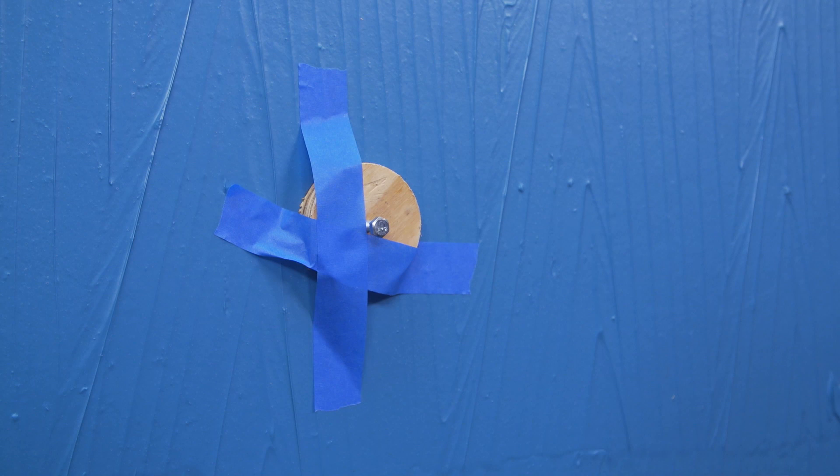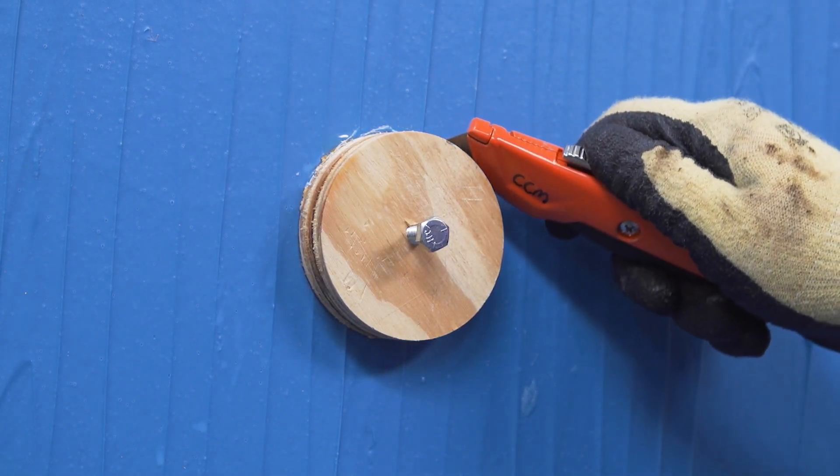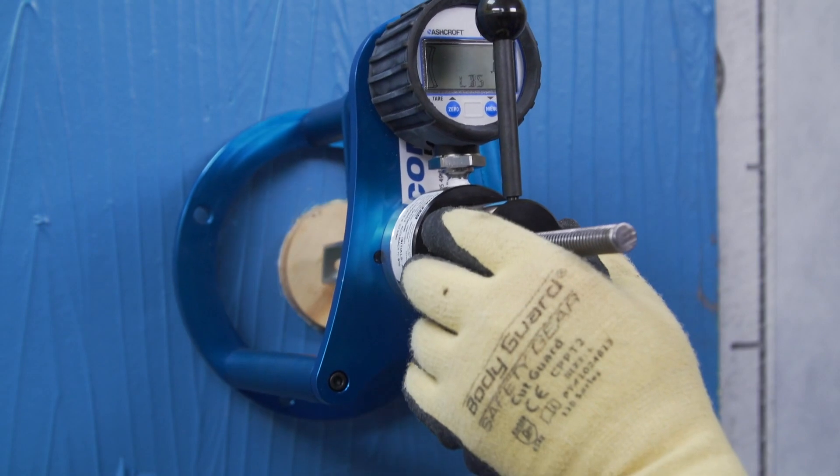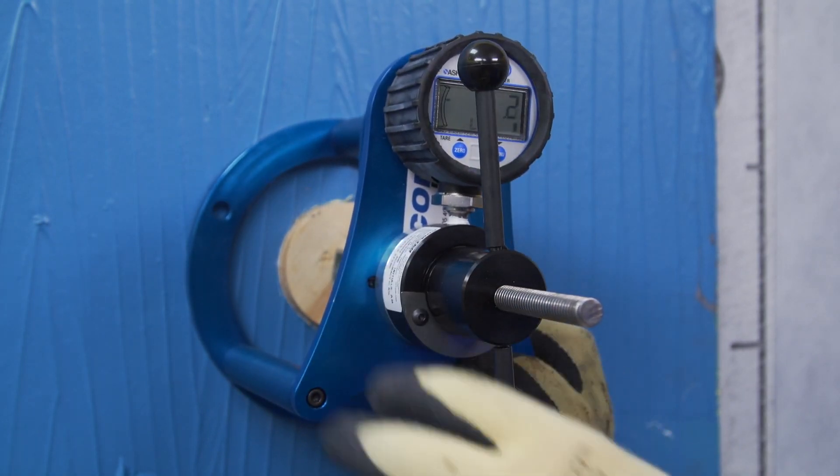Once the adhesive has set, you are ready to conduct the pull test. First, remove the tape, then score around the puck using a utility knife. Zero the testing device gauge and prepare the instrument for testing according to the manufacturer's instructions.